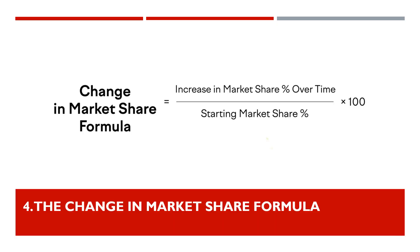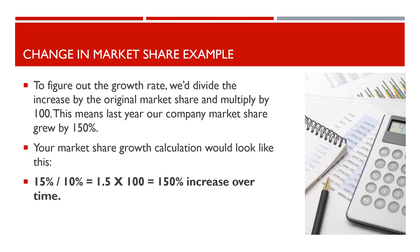Another way is to calculate your change in market share over a given period. To track market share growth, you'll need to compare your market share numbers across different points in time. Let's say in April of 2021 our market share was 10%, and by April of 2022 it had grown to 25%. In this case, our market share has increased by 15 percentage points. To figure out the growth rate, we'd divide the increase by the original market share and multiply by 100. This means last year our company market share grew by 150%. Your market share growth calculation would look like this: 15% divided by 10% equals 1.5, multiplied by 100, which equals a 150% increase over time.